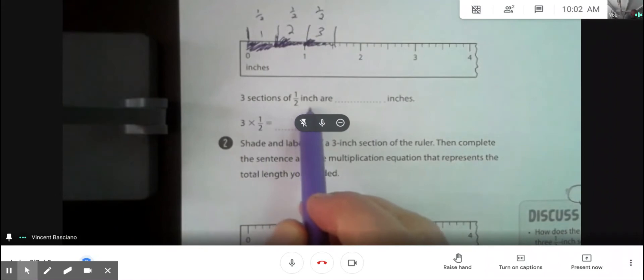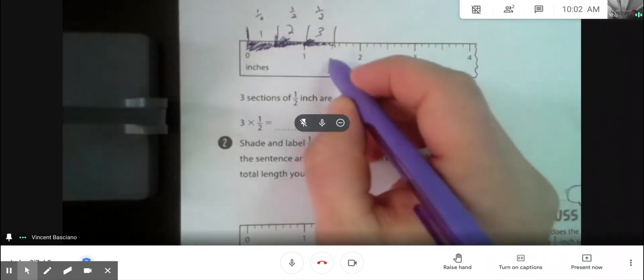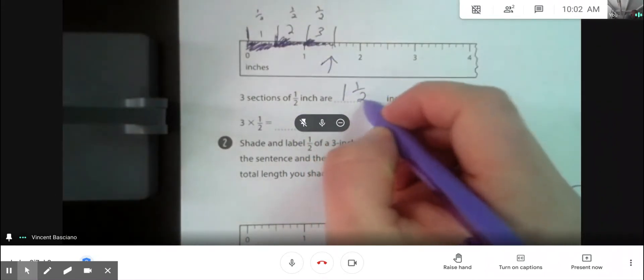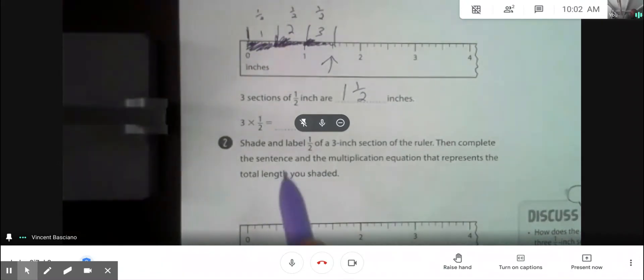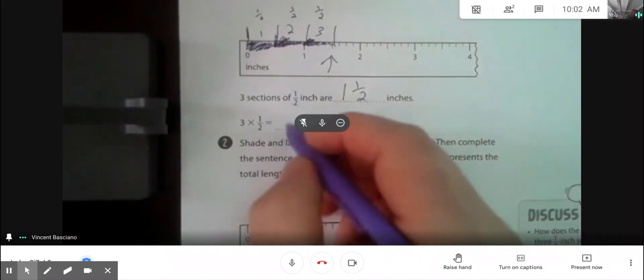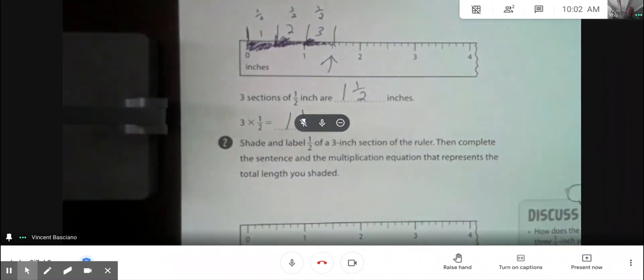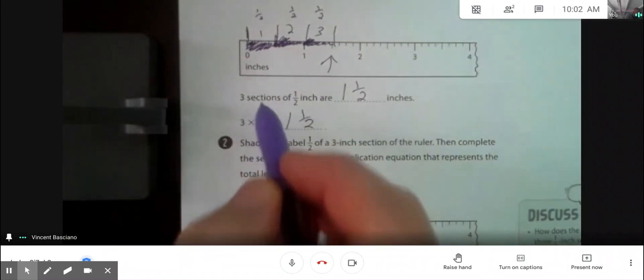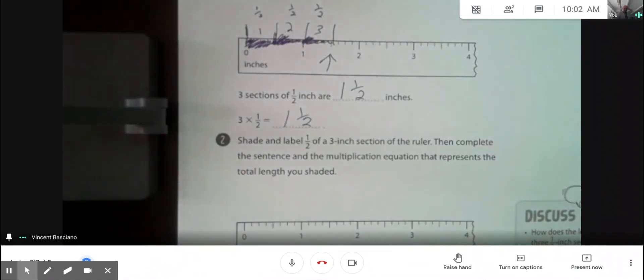Three sections of one-half inch are, where did I wind up? I wound up at one and one-half inches. And similarly, three times one-half is one and one-half. Can I get, can I see that ugly-looking pin? There we go, that's better. So that you should have on your paper. So that's one way of doing it. This is the first kind of multiplication you'll see. Three times one-half. Three groups of one-half.